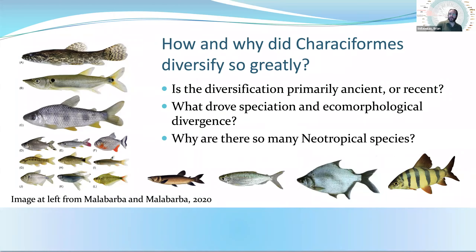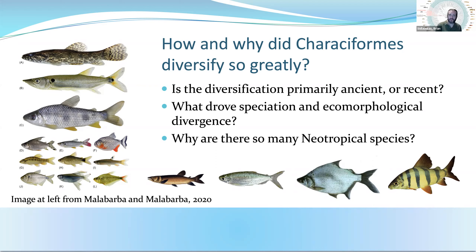When we look at this kind of exuberant diversity, the immediate evolutionary questions are just how and why did this particular group of fishes diversify so greatly? We might ask more specific questions: is the diversification primarily ancient or recent? What drove all of this change? Why is there so much speciation? What caused the ecomorphological divergence? And ultimately, why are there so many neotropical species, and what was different about the portions of this radiation that unfolded in South America versus Africa?